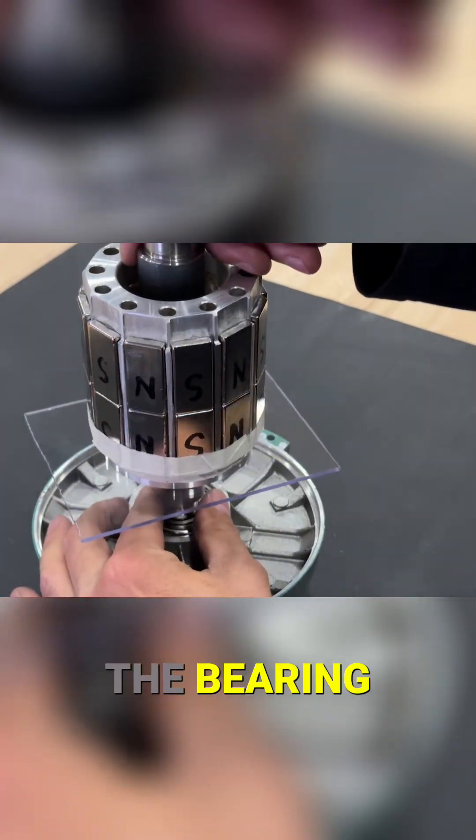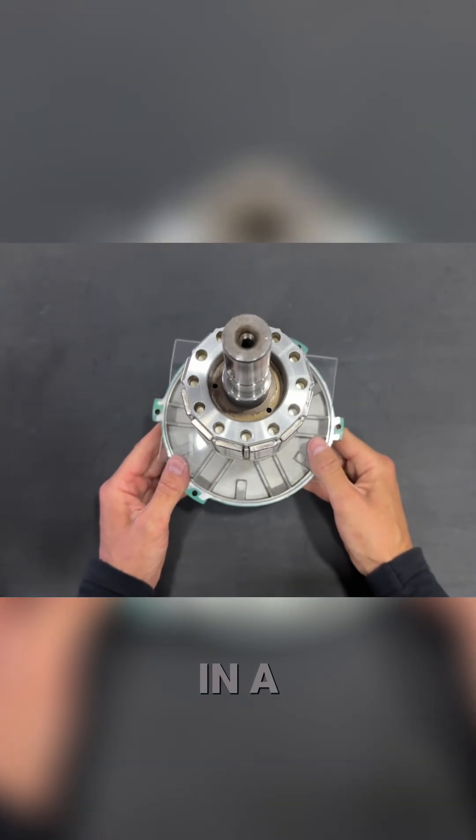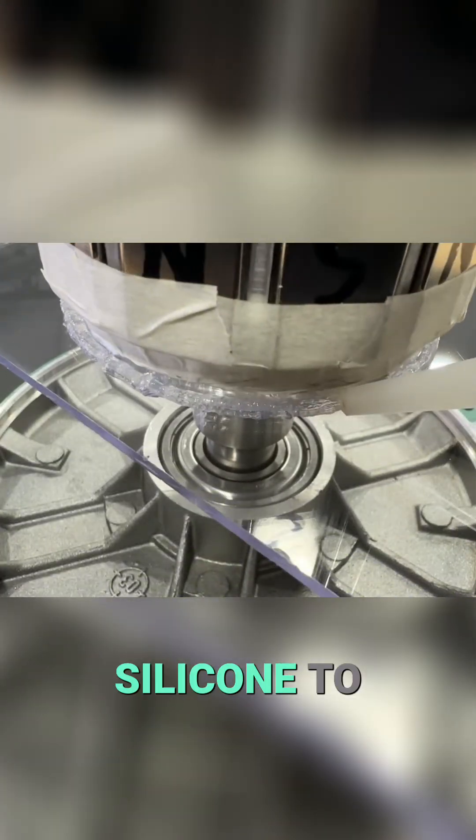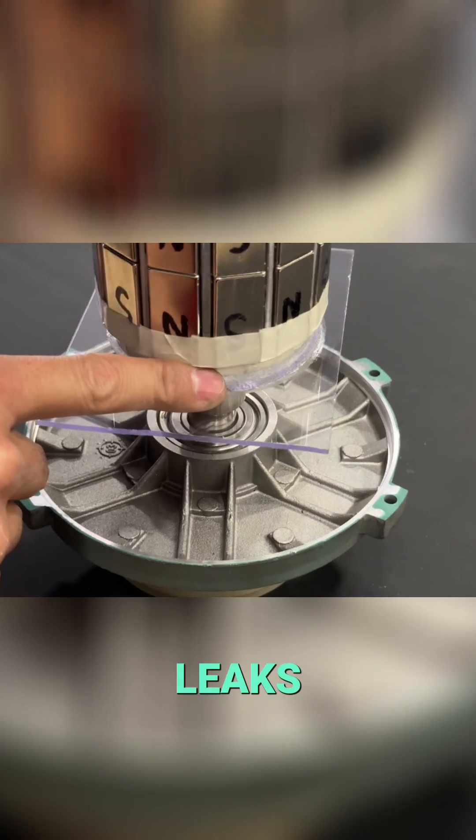We place the shaft over the bearing so it can rotate freely in a vertical position. We seal it with clear silicone to prevent epoxy leaks.